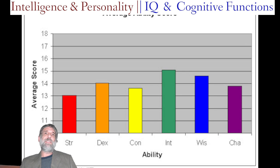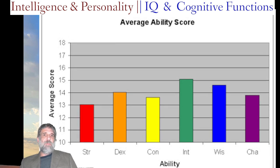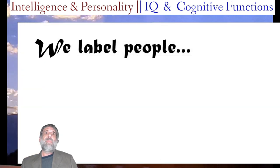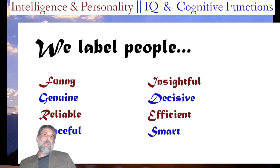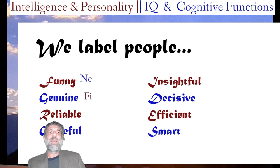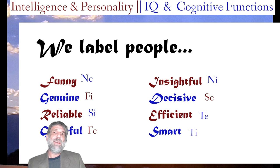Let's look for a second at Dungeons & Dragons. D&D breaks down the human being into physical and metaphysical qualities. Strength, dexterity, and constitution are all physical. Intelligence, wisdom, and charisma are metaphysical — so I can be smart and wise and you can't test it physically. We use labels like this to describe people too: funny, genuine, reliable, graceful, insightful, decisive, efficient, and smart — and these generally correspond to certain cognitive functions. Extraverted intuition maps to funny, introverted feeling to genuine, introverted sensing to reliable, extraverted feeling to graceful, introverted intuition to insightful, extraverted sensing to decisive, extraverted thinking to efficient, and introverted thinking to smart.